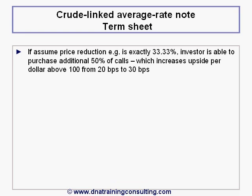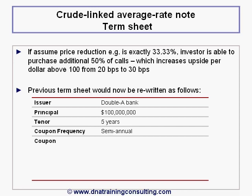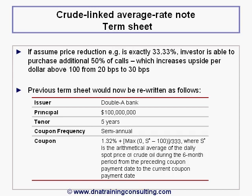If we assume the price reduction is exactly 33.33%, the investor is able to purchase an additional 50% of calls — note carefully 50% and not just 33% — which increases his upside per dollar above 100 from 20 basis points to 30 basis points. Our previous term sheet would now be rewritten with this coupon formula. The increased exposure is reflected in the denominator of 333 in the payoff formula, which replaces the previous denominator of 500.